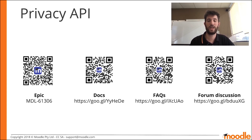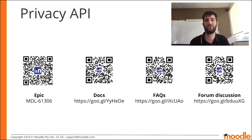The changes for the API are covered in the Moodle Tracker issue number MDL-61306. The API is also documented in the Moodle developer documentation with a collection of FAQs and an active forum discussion on the General Developer Forum.